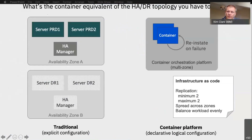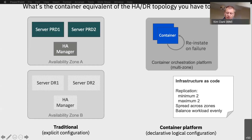The benefit I'm talking about most powerfully here is operational consistency. The containerized environment allows you to see any runtime in the same way, and scale them in the same way, perform resilience in the same way. To build a traditional integration infrastructure, you'd need a lot of proprietary knowledge specific to that integration runtime — production/DR servers, HA managers, and so on. In a container environment you use standard container techniques, standard Kubernetes command-line controls, the same way of describing replication, scaling, HA between containers and nodes, and load balancing across regions.